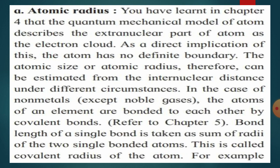For example, elements of the first period will contain one shell, while elements of the third period will contain three shells. So the atom has no definite boundary. The atomic size or atomic radius can therefore be estimated from the internuclear distance under different circumstances — it is different for different elements.